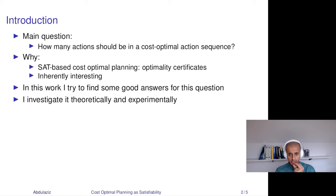Also, if we had good and tight enough bounds, we can use them to generate optimality certificates by using the unsolvability certificates that SAT solvability gives us. Lastly, I think it's also theoretically interesting and inherently interesting. In this work, I tried to find some good answers for this question and I investigated it theoretically and experimentally.